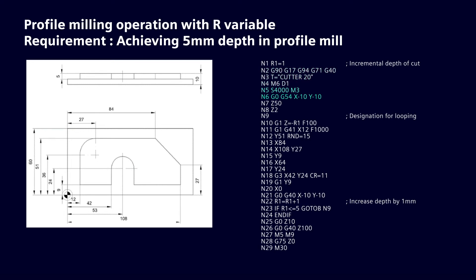In the next line, define the approach point in X and Y positions. Block number N9 is used to loop the program every time with the IF condition. In the N10 block, we bring the Z-axis down, where we translate the value of R1 to the Z-axis. Continue to write the program with compensation as per profile till N21. In N22 block, we increase the depth of cut by 1 mm, commanded as R1 = R1 + 1.